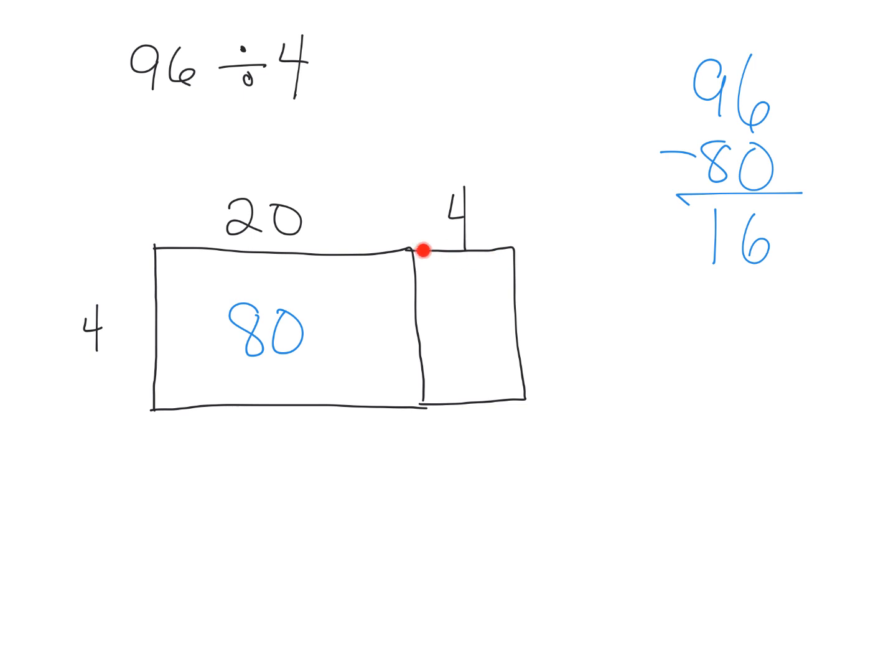If it's a width of four and a height of four, that means it uses 16 square units. And that wraps up, that finishes all 96 square units of area. So that means the answer is 24. The width of our rectangle is 24.